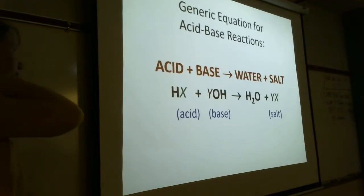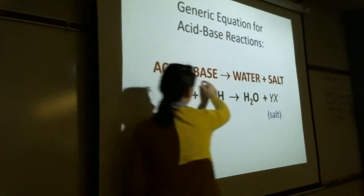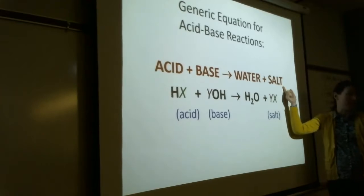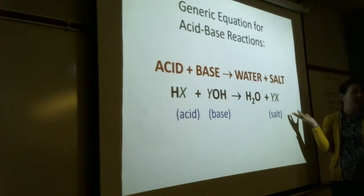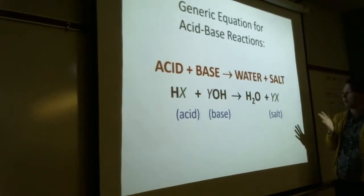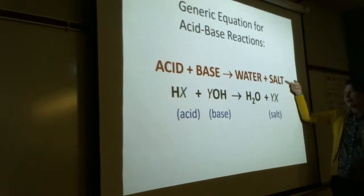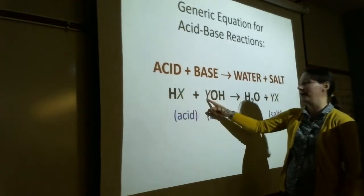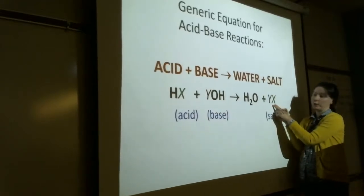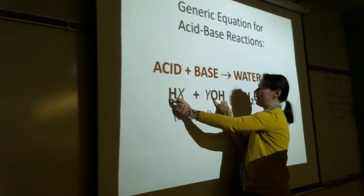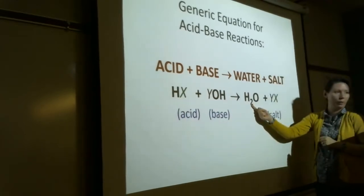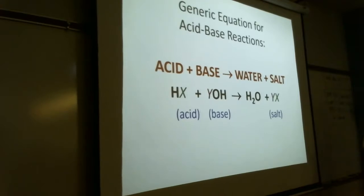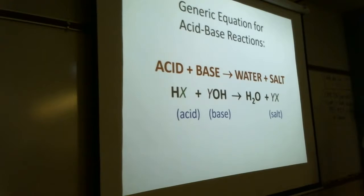This is the generic equation for an acid-base reaction: acid plus base makes water and salt. Salt is any ionic compound — we normally think of salt as NaCl, but as chemists we know NaCl is not the only salt. Any ionic compound is a salt. We're taking the anion from the acid and the cation of the base, and those come together to make the salt. The H from the acid and the OH from the base make HOH, which is H₂O. It's a double displacement reaction.